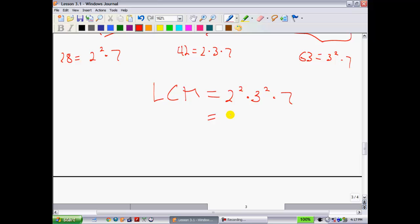Lastly, you just multiply these together. This is 4 times 9 times 7. When you multiply those all together, we get 252.